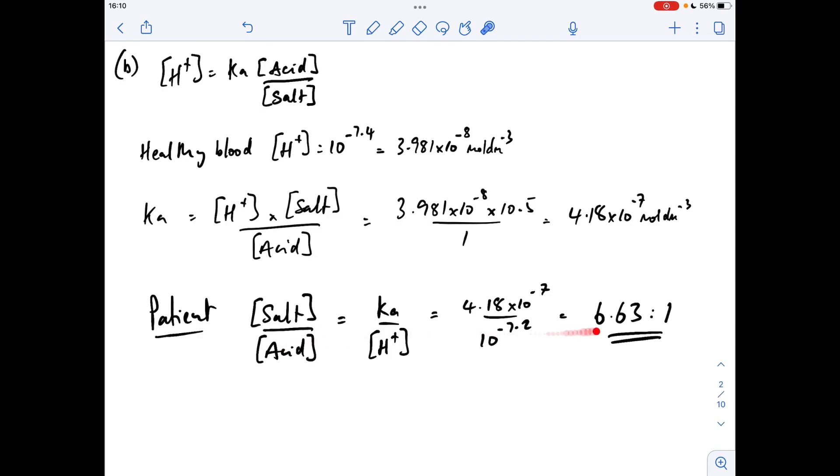I'll quickly explain that calculation. We want the salt to acid concentration, so we need to put that up there and that down there - that comes underneath Ka. We get that expression there, put in the Ka we've just calculated, H+ concentration of the patient's blood is 10 to the minus 7.2, and that gives us a ratio of 6.63 to 1.